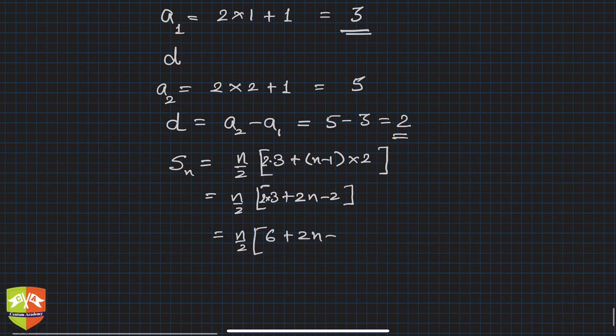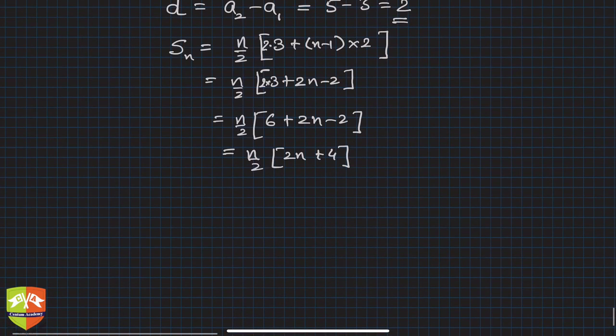Which is n by 2 times [2n plus 4]. If you simplify further, you can take out 2 common from the second term, it will become n plus 2. So n into (n plus 2) is the sum of nth term.